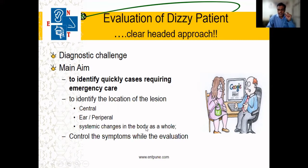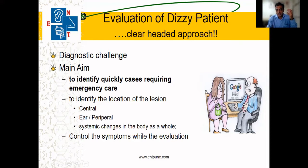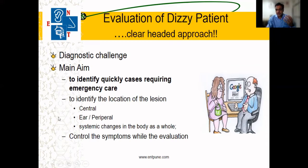Try to identify the location of the problem. Giving symptomatic treatment is not the right way — try to identify what exactly we are treating. Is it a brain or central cause? Is it an ear or peripheral cause? Or are there other conditions like cardiac conditions, hypertension, or diabetes? It is important that we diagnose and then start treatment.